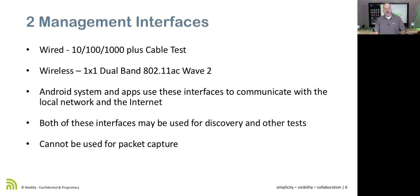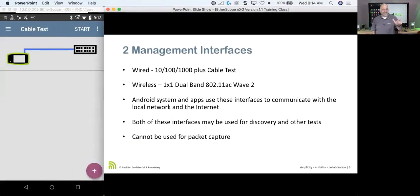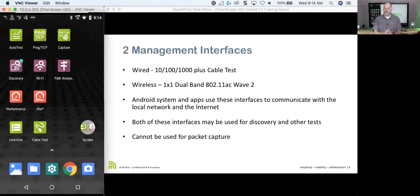On the wireless side, we have a one-by-one dual-band 802.11 AC Wave 2 radio. This management wireless radio allows us to connect the Etherscope NXG to our wireless network. One of the things I really like about the Etherscope is that we can access it using VNC.